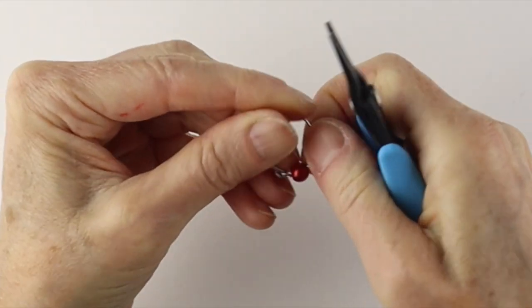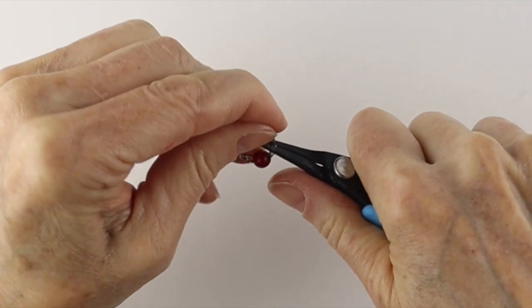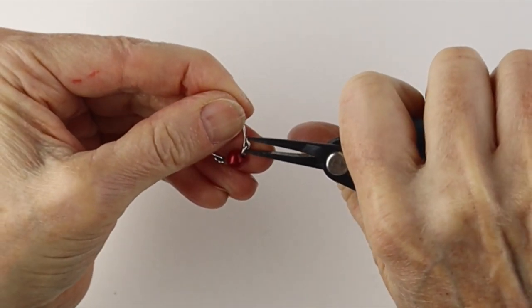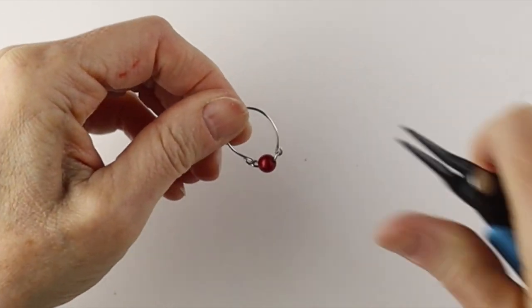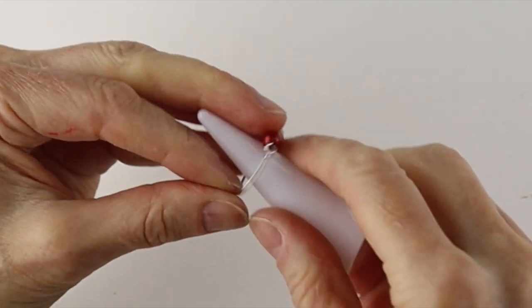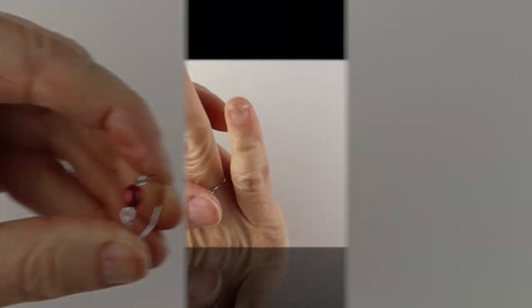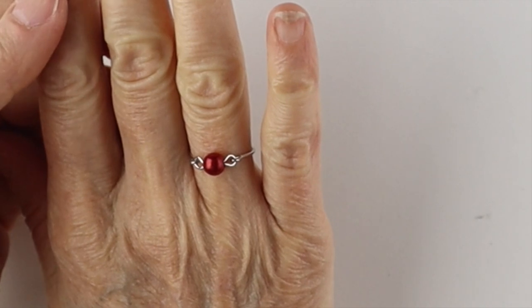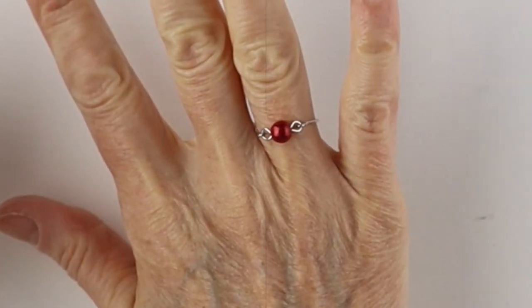You could pinch it a bit. Just be careful. The wire is very hard. You can do the same thing with 20 or 18 gauge copper wire. Then we're going to put it back on the ring cone to adjust it. And there you have your classic ring with the bead made out of a paper clip.